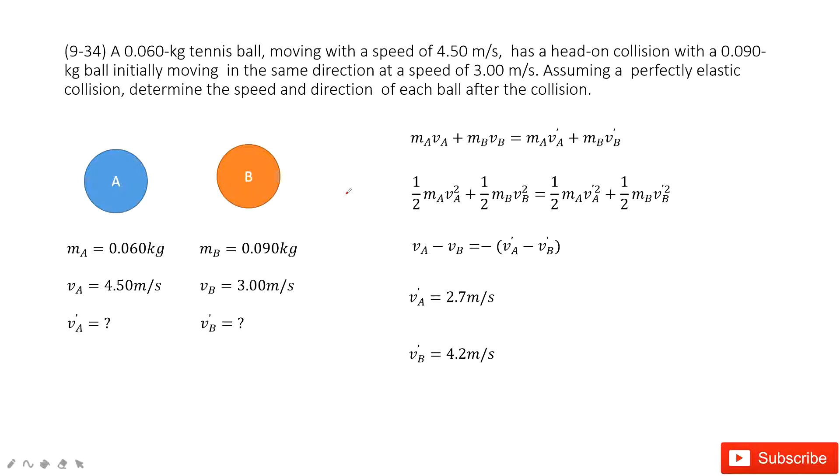As you can see, we have two tennis balls. The mass of each is given. They have an elastic collision, and the initial velocity is given.